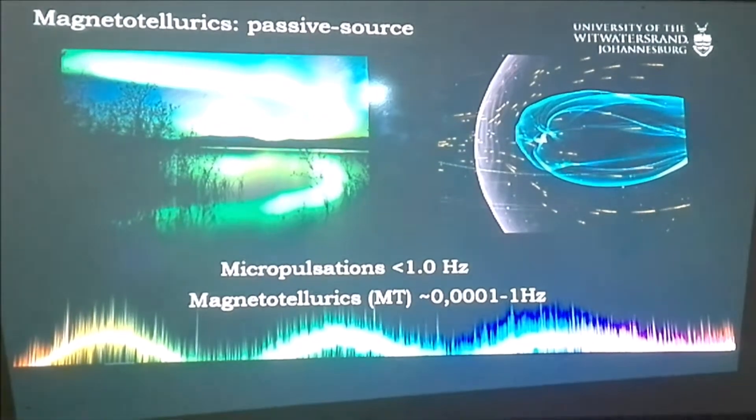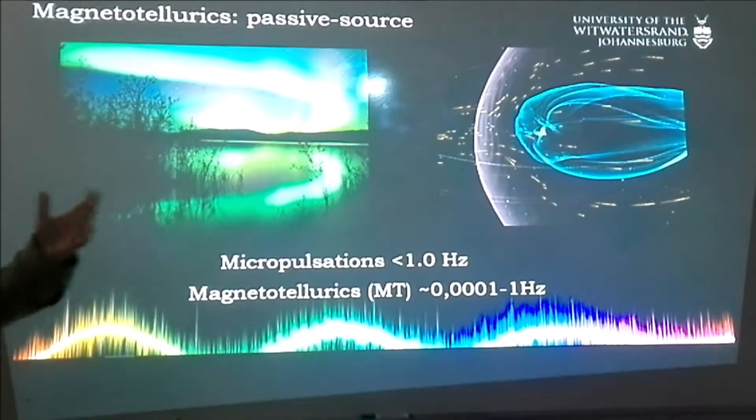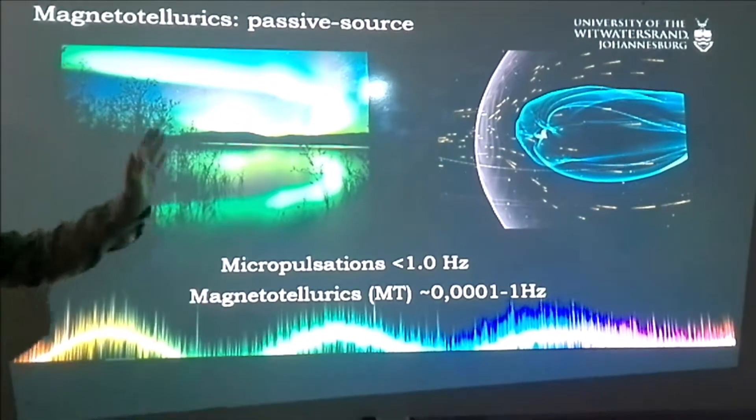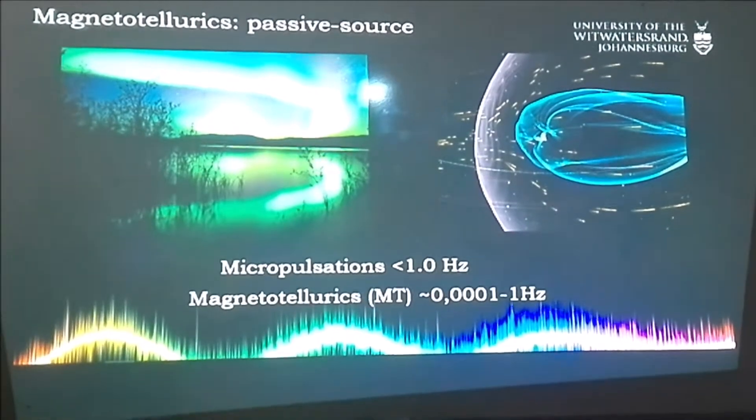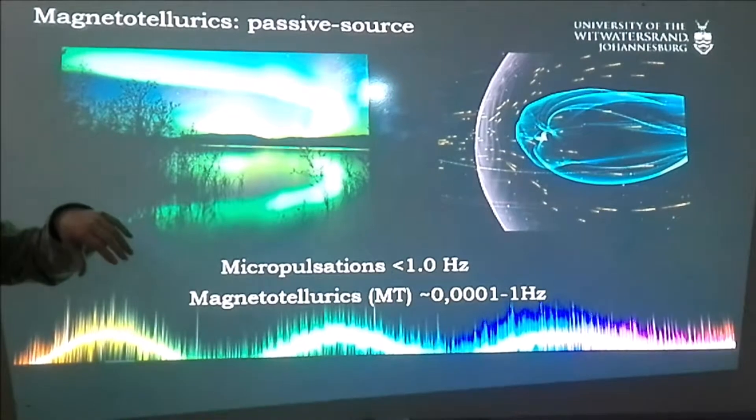Now the thing with the solar winds is that they change in velocity, density, and magnitude all the time, which results in the magnetic field fluctuating. So it's moving, especially on the day side of the planet. So what this does is obviously a magnetic field will induce some sort of current.